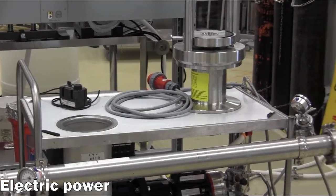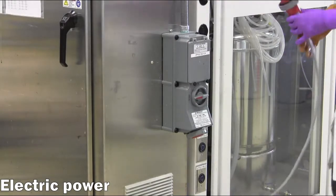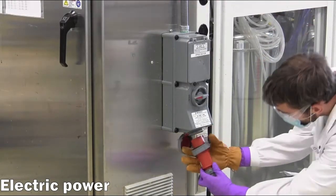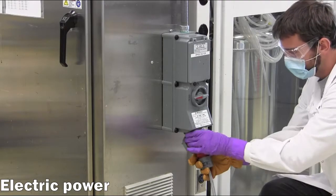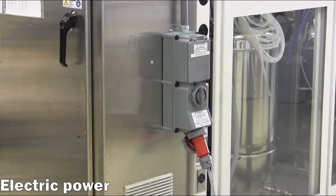After donning leather gloves, the electrical cord may be connected to a 480-volt power source. The technician then steps to the side of the breaker box, looks away, and switches the breaker to the on position.